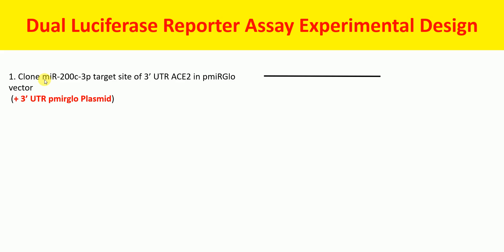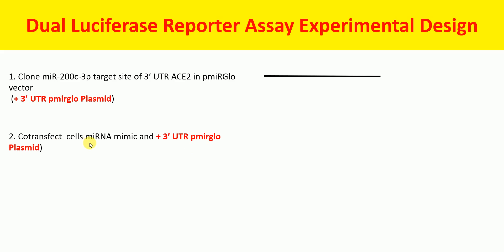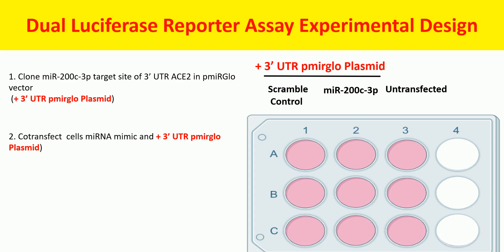First, we clone — as an example — the MIR200C3P target site present in the 3' UTR of ACE2 into the pMIRGLO vector. This pMIRGLO vector is the dual luciferase reporter assay backbone. After the cloning, the next step is we co-transfect cells with MIR200C3P miRNA mimic and the 3' UTR pMIRGLO plasmid cloned in step 1.